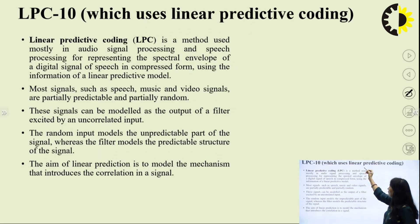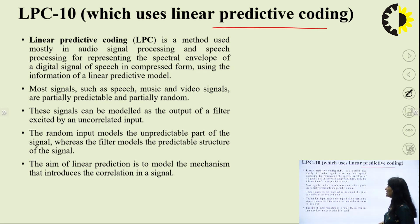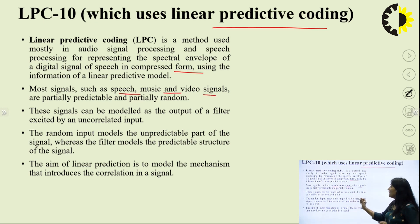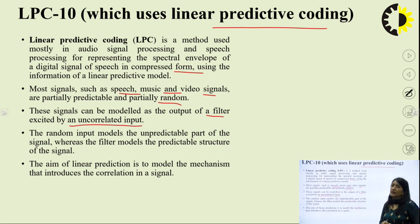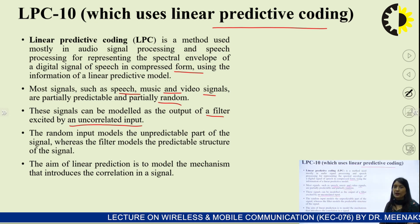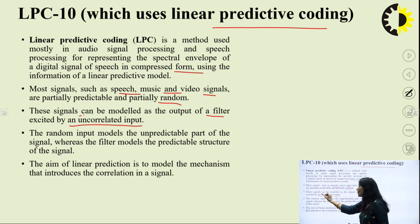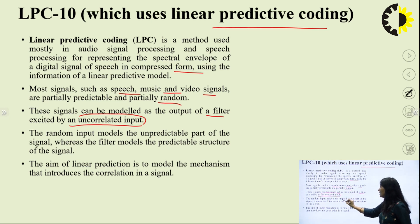LPC-10 is a special form of vocoder — a method used mostly in audio signal processing and speech processing for representing the spectral envelope of a digital speech signal in compressed form using a linear predictive model. Most signals such as speech, music, and video are partially predictable and partially random. These signals can be modeled as the output of a filter model excited by an uncorrelated input. The random input models the unpredictable part of the signal, while the filter models the predictable structure. The aim of LPC is to model the mechanism that introduces the correlation in a signal.